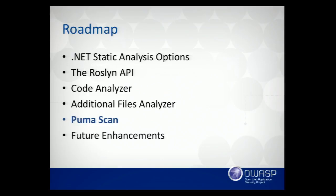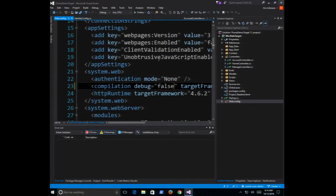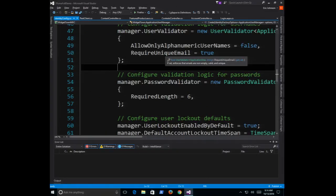At this point you know how to write the rules yourself — but rather than telling you to do all the work, I'll introduce what we've been calling the Puma Scan. This is a free Roslyn secure code scanning extension available in NuGet and the VS Marketplace. Right now I'm at about 40 rules in version 1.0 that you can download and install right now. Let's close the demo target and kill My Awesome Analyzer, and open the WidgetTown code we made fun of at the beginning.